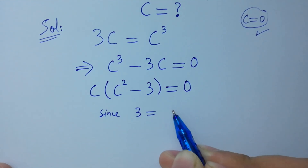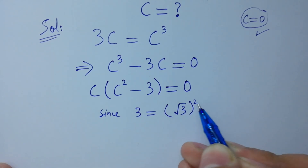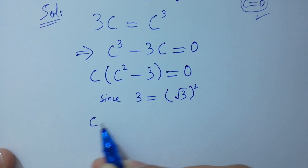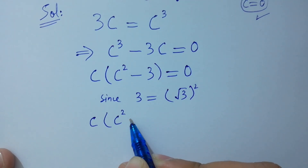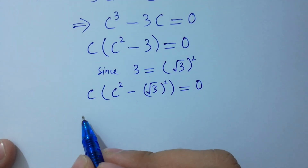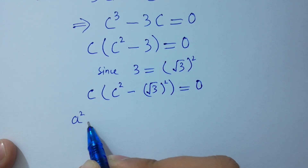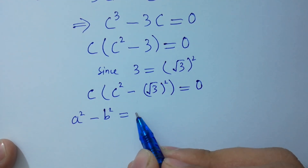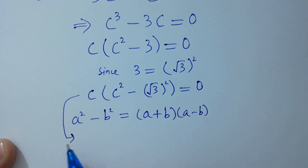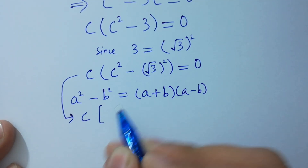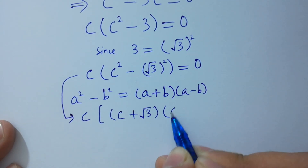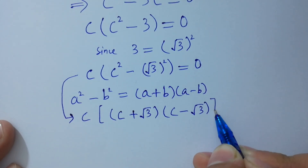Since 3 equals the square of square root of 3, we can write: c times the quantity c squared minus square root of 3 squared equals 0. Using the identity a squared minus b squared equals a plus b times a minus b, this becomes c times c plus square root of 3 times c minus square root of 3 equal to 0.